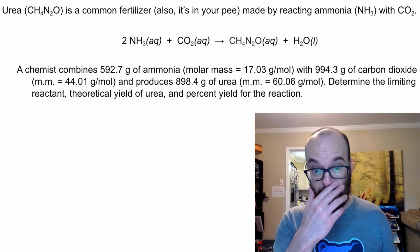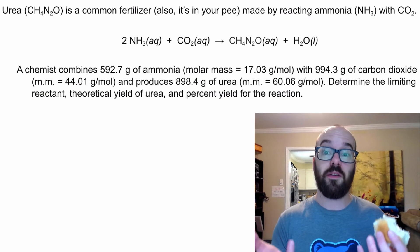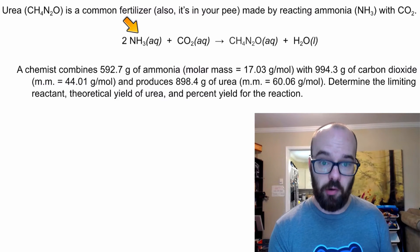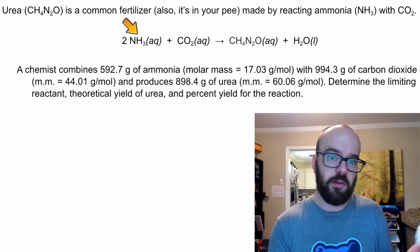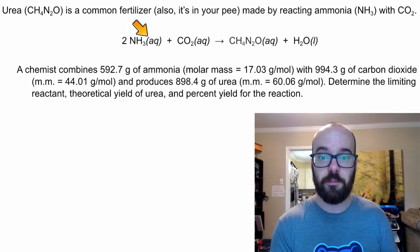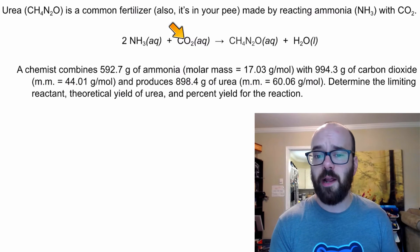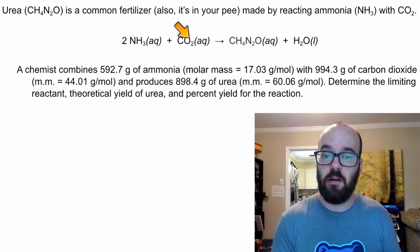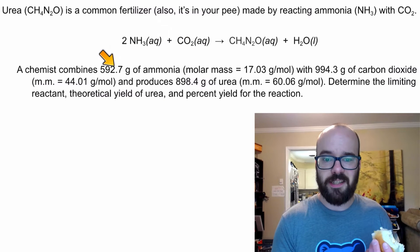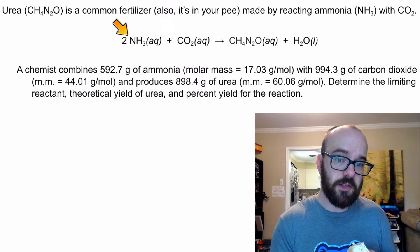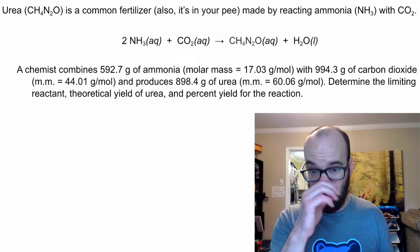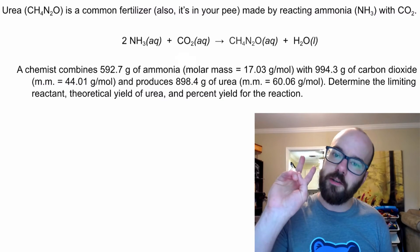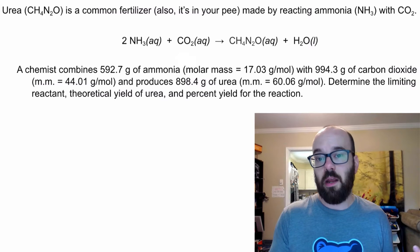So here's how I set up these problems. Whenever I've got two reactants and I don't know which one's limiting, in other words, I don't know which one I'm going to run out of first. Am I going to run out of ammonia first? And if so, as soon as that ammonia is gone, this reaction is done. Or am I going to run out of carbon dioxide first? I don't know which one I'm going to run out of first based on these amounts. So here's what I'm going to do. I'm just going to do two problems and then pick the lower answer.